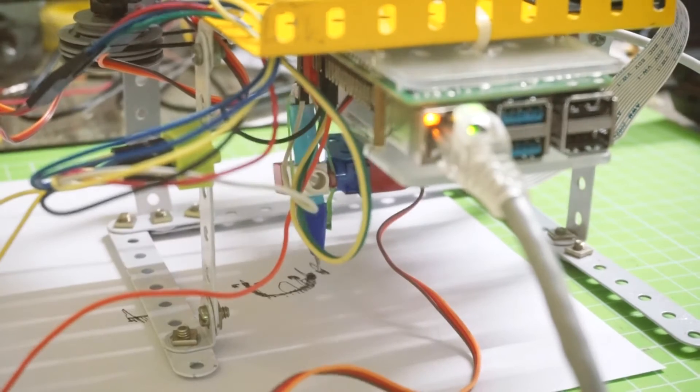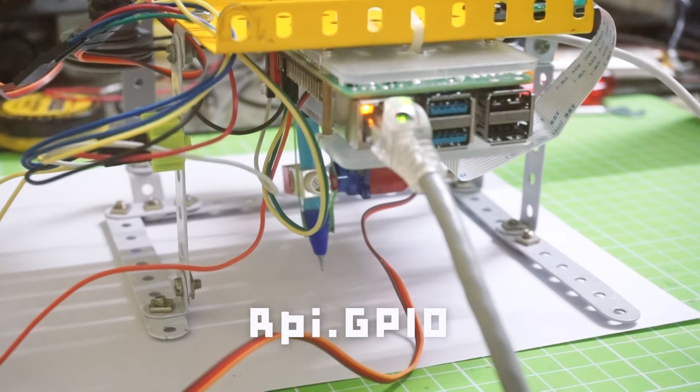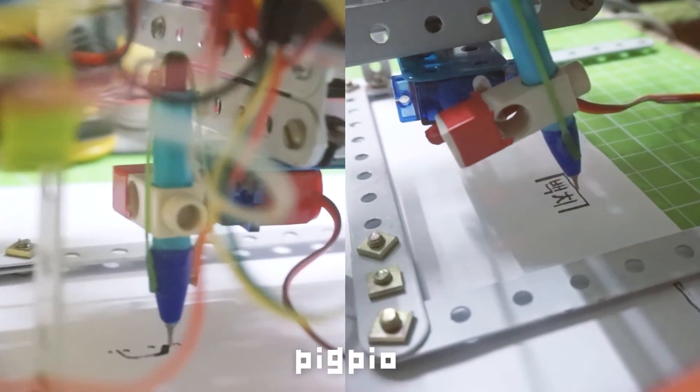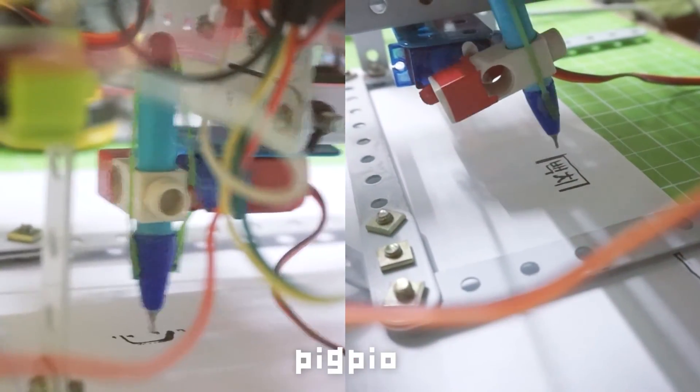Alright, I noticed that the vibrations in the slider is killing the print quality. Upon searching up the issue I found that the PWM used by RPI GPIO library is software generated and is not stable. So I switched to PI GPIO which provides a hardware driven PWM signal and now the vibrations are totally gone.